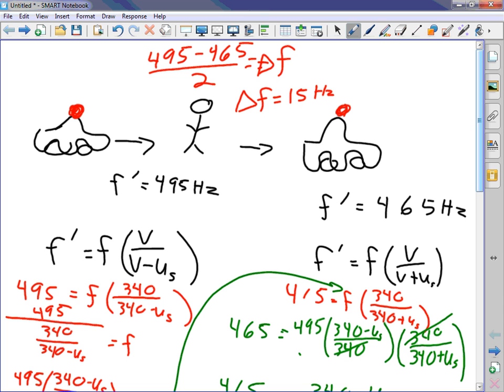So 495 minus 465 is what? Delta f equals 15 hertz, right? So, now check this out. What's happening here is, from some f, whenever I'm coming towards, I add 15 hertz, and whenever I'm going the other way, I subtract 15 hertz. Does this make sense?